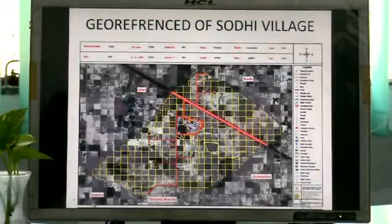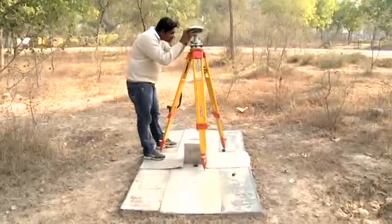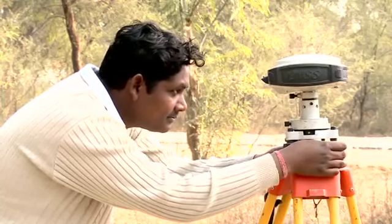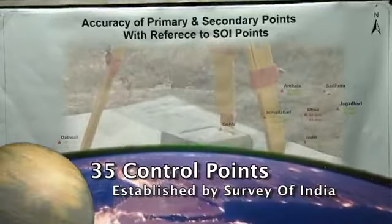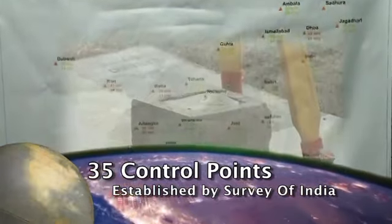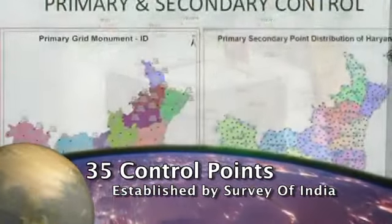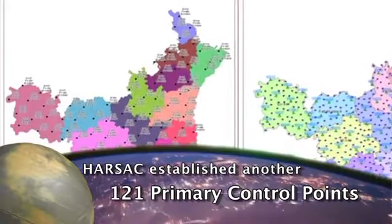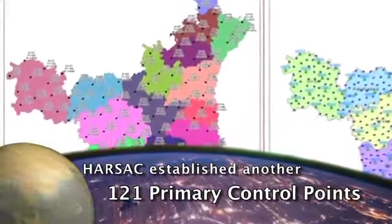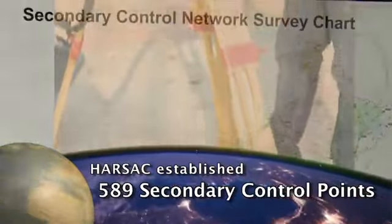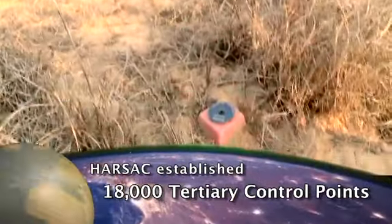For accurate geo-referencing of cadastral maps, monumentation easily identified in satellite images of the entire state was done. Initially, 35 primary control points from the Survey of India were used to build a reference map. Another 121 primary control points with 20 km spacing followed, then 589 secondary control points with 8 km spacing, and finally 18,000 tertiary control points were added to the network by HARSAC.